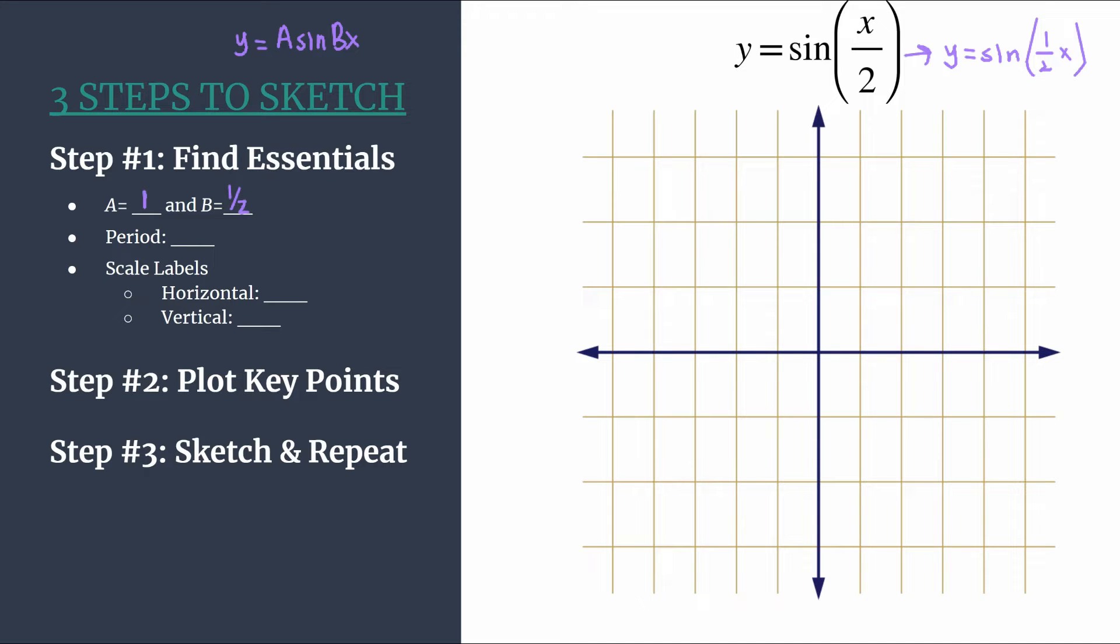Remember b tells us how many cycles happen between 0 and 2 pi, so half a cycle. And b also helps us calculate the period. For sine, we do 2 pi divided by b. So that's 2 pi divided by 1 half, so really you are multiplying by the reciprocal, 2 pi times 2 over 1. Our period here is 4 pi.